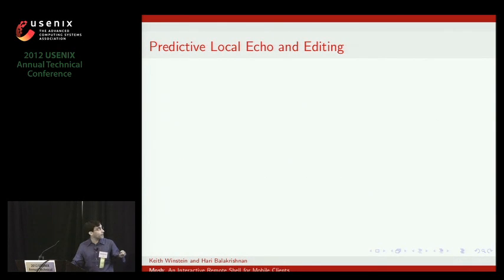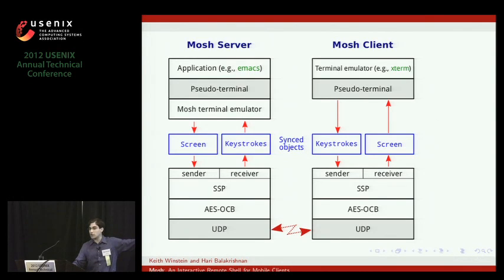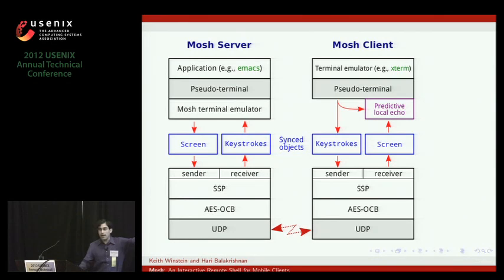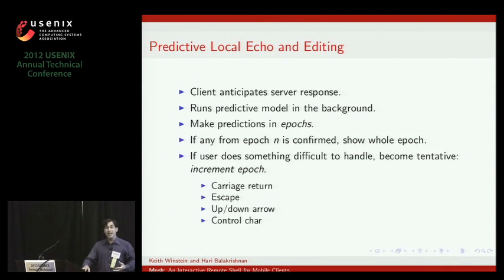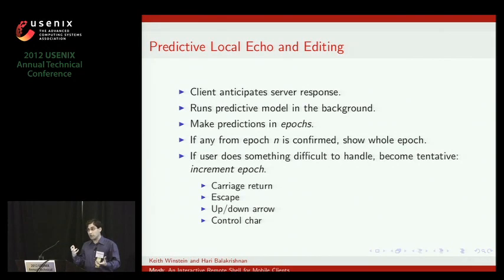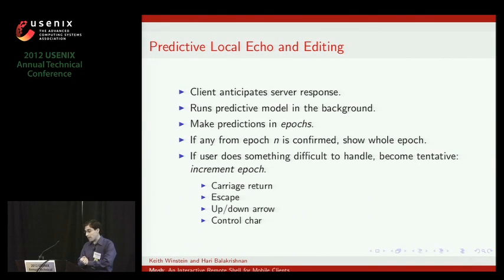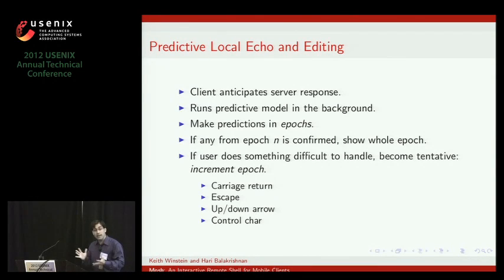Okay, now let's talk about the local user interface. So this is the diagram I showed you, but actually we're going to add one little feature in the upper right — the predictive local echo. So instead of rendering directly the server's screen state, we mutate a little bit based on what we think is going to appear. We have a simple algorithm for this. The client runs a predictive model of the application's behavior. We think when you type, it's probably going to be echoed. But we're not sure, because about 30% of the time, what you type isn't echoed.